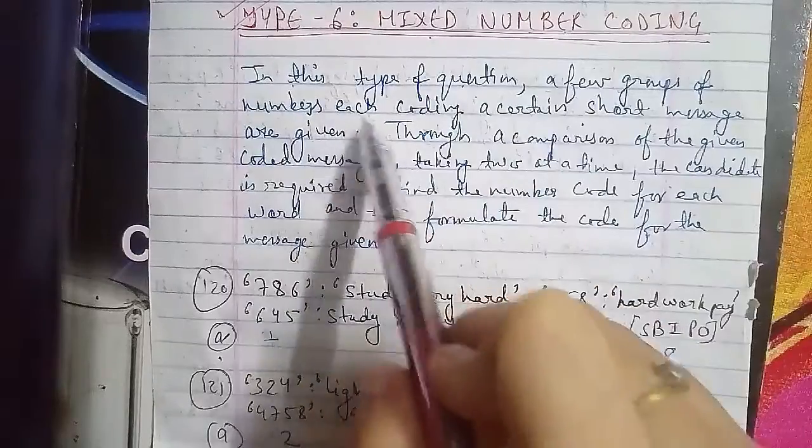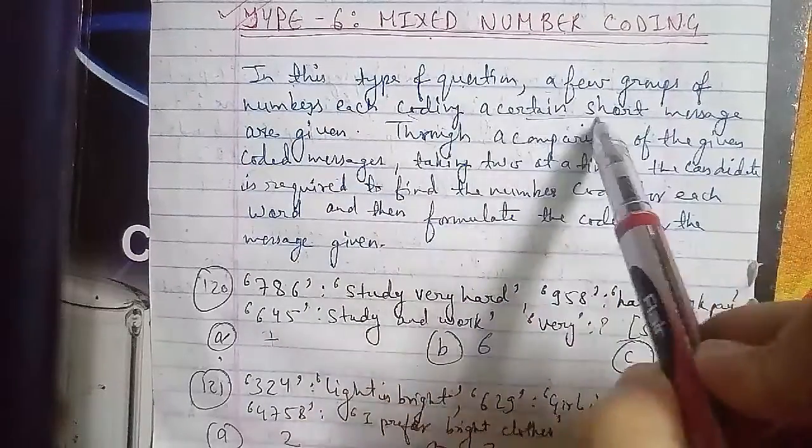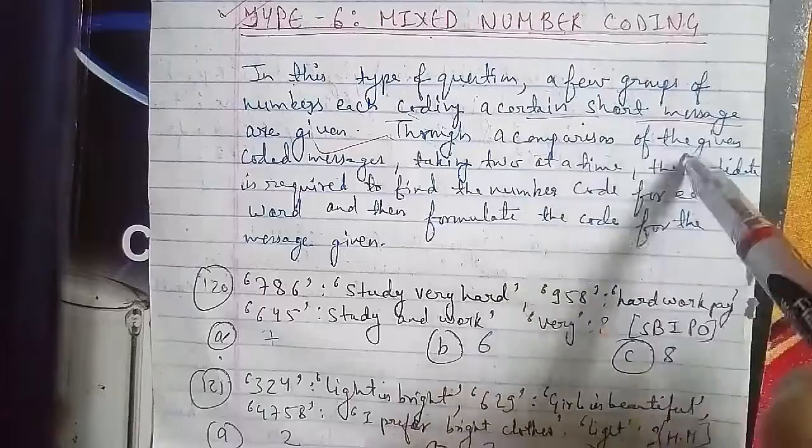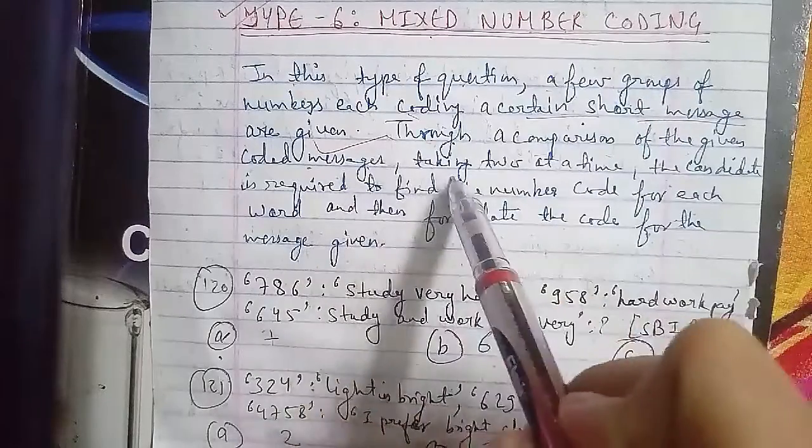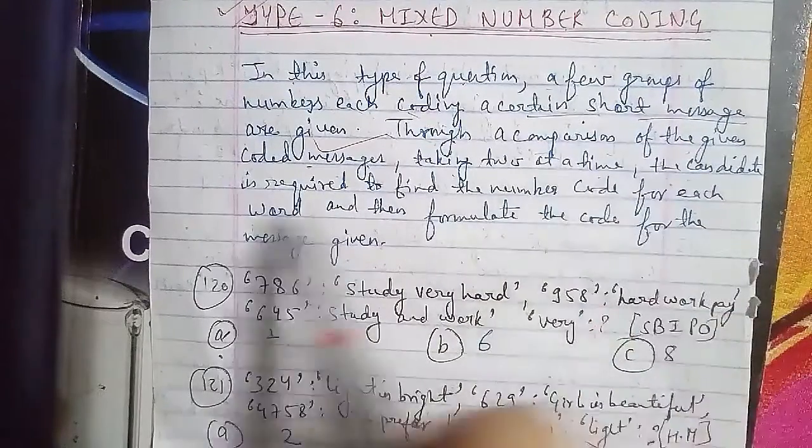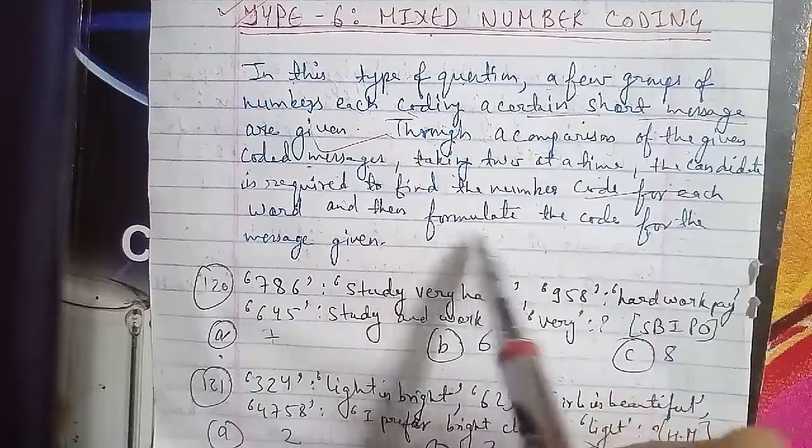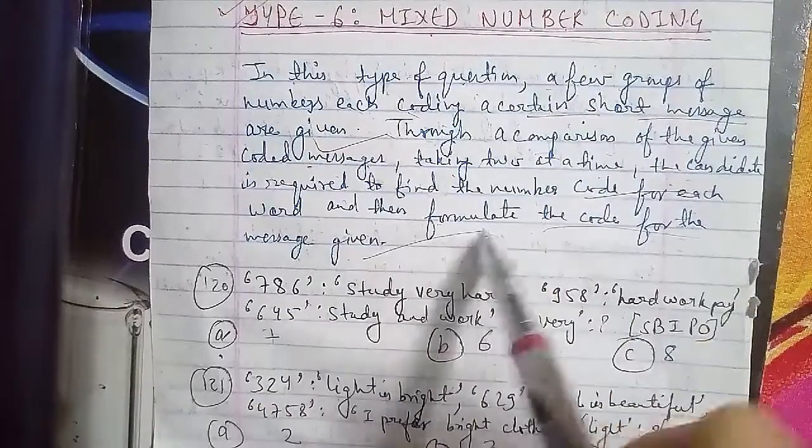The candidate is required to find the number code for the word and then formulate the code for the message given. Basically, you are given numbers and codes for short messages, and you have to find out the answer. Question 128 is first.